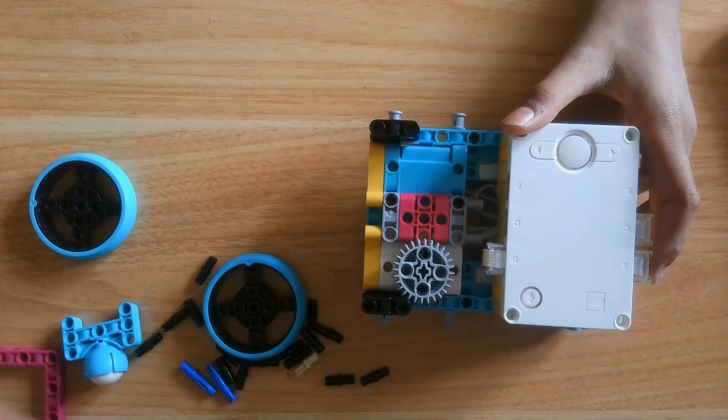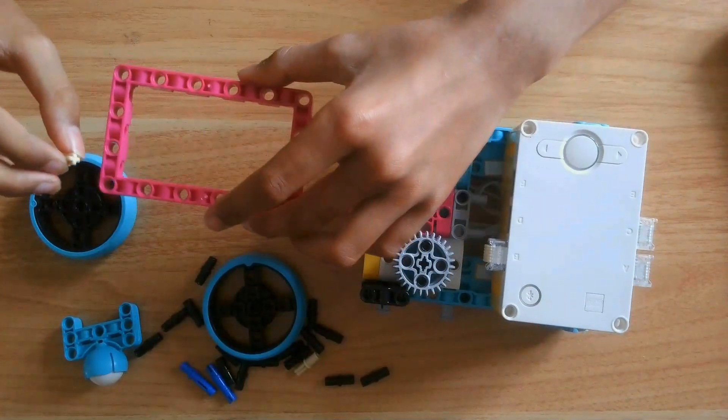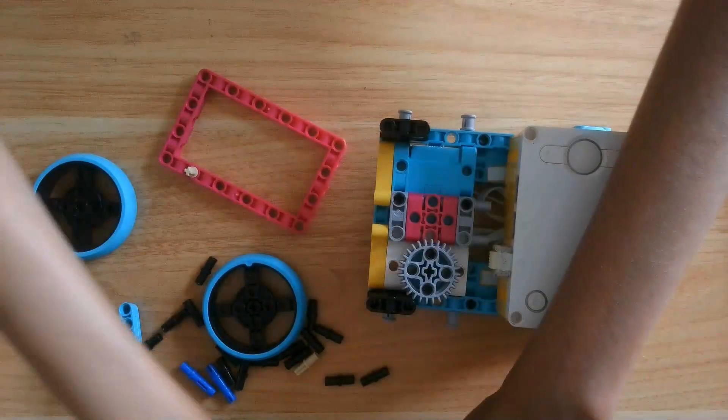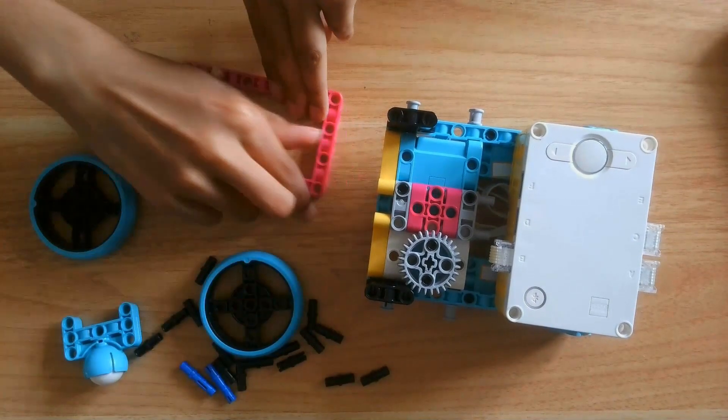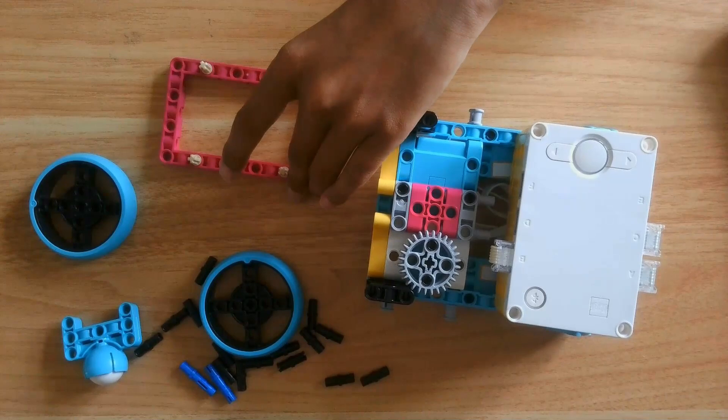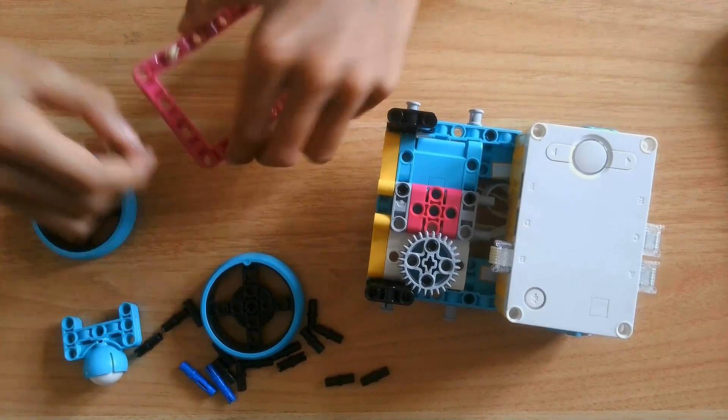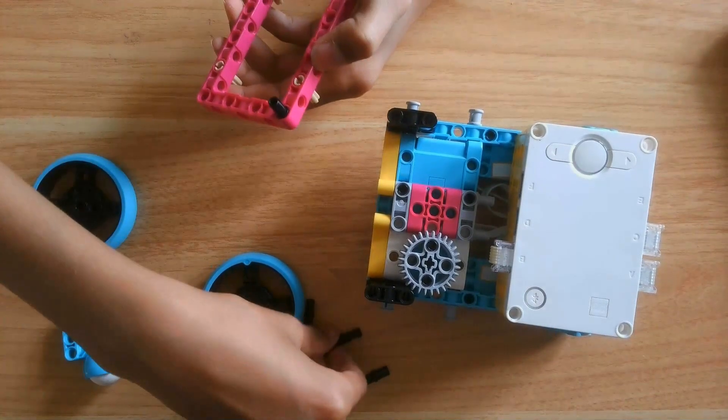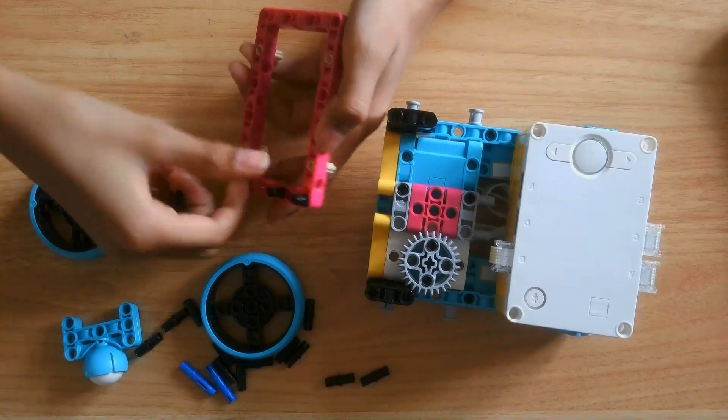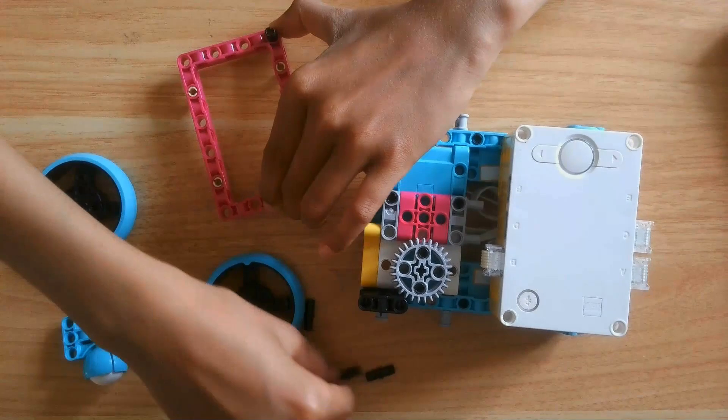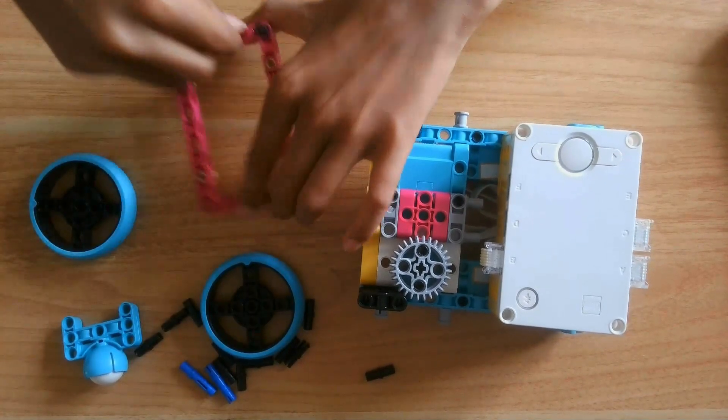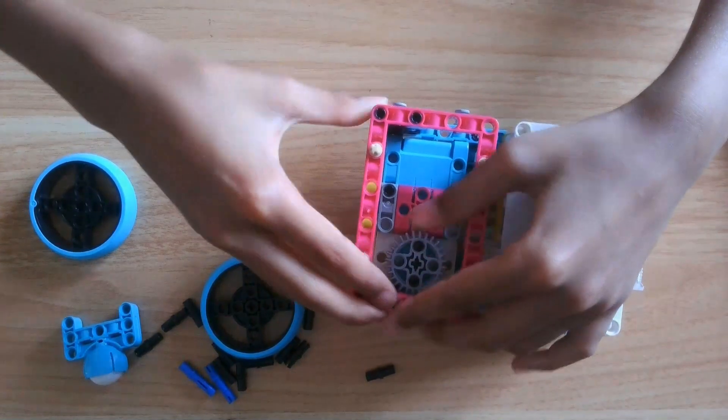Now, you're going to want to assemble your main frame. So, first you're going to put four of these here. And then you're going to want to get two, four black pins. Two on each side. And attach that on top.